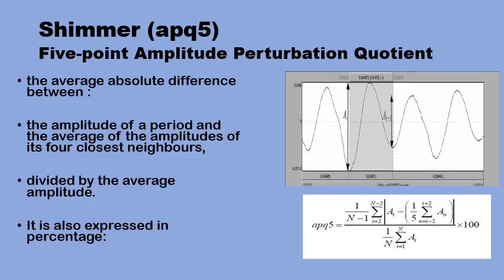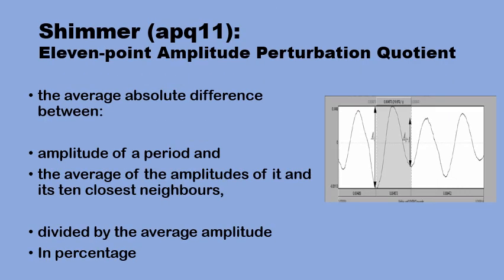The shimmer APQ5, the five-point amplitude perturbation quotient, uses the two cycles before and two cycles after a certain glottal cycle, averages their amplitude, subtracts this from the amplitude of the middle cycle, then divides by the average amplitude of the five cycles to produce APQ5. The APQ11 is obtained similarly but using 11 consecutive cycles — five cycles before and five cycles after a certain glottal cycle — subtracting the average of those 11 cycles from the amplitude of that cycle, then dividing by the average amplitude.